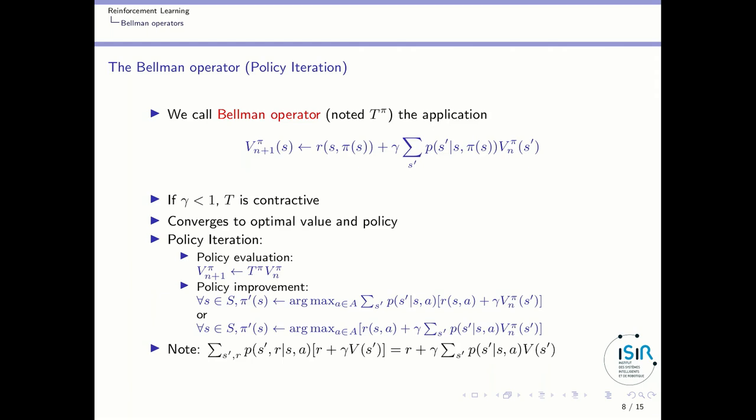A different operator is defined as the Bellman operator — that's the Bellman backup again, but here you don't have the max operator. The Bellman operator is also contractive. So by applying policy iteration to the value function, you will converge to an optimal value and also find an optimal policy.